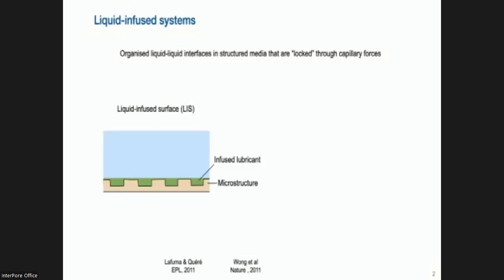So just to give you a few examples, one type of liquid-infused system is a liquid-infused surface, LIS, where we have a microstructure that locks in a liquid which we call the lubricant and above this lubricant we have a second liquid, for example, water. So you can think of the lubricant as oil and the second liquid as water. And this was introduced around 2011 by these two groups.